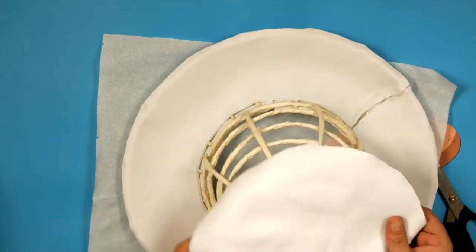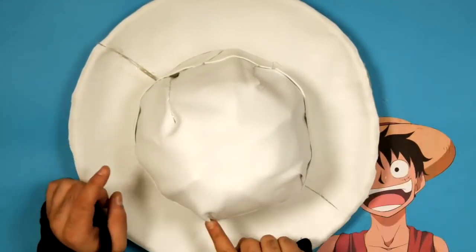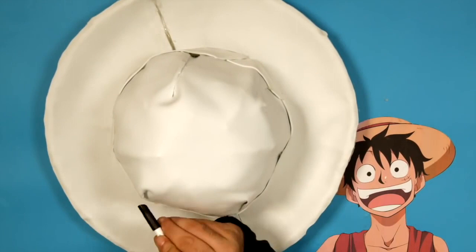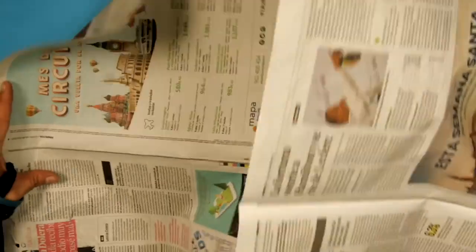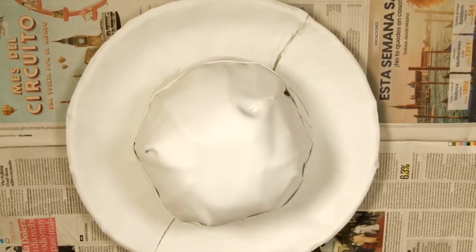Now cut the piece and add it into the structure. We have also placed an EVA rubber strip so that we can later place on it the characteristic red ribbon of Luffy's hat. Do not worry if it looks uneven. In fact, that is better, because in this way we will give it a more realistic look.